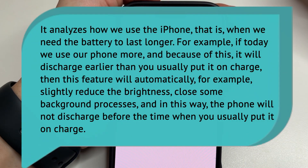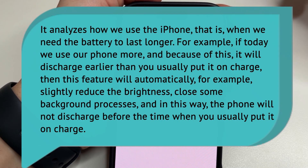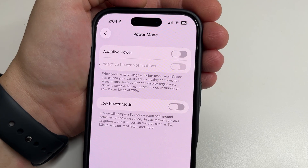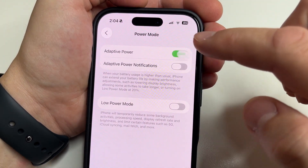Adaptive Power Mode analyzes how you use your iPhone — specifically when you need the battery to last longer. For example, if today you use your iPhone more than usual and it will discharge earlier than normal, this feature will automatically slightly reduce the brightness or close some background processes so the iPhone won't discharge before your usual charging time. The advantage is longer battery life, but the downside is that performance may sometimes be reduced. This won't be noticeable in normal tasks, but may be noticeable in heavy games. If you don't play heavy games, you can turn on this feature.